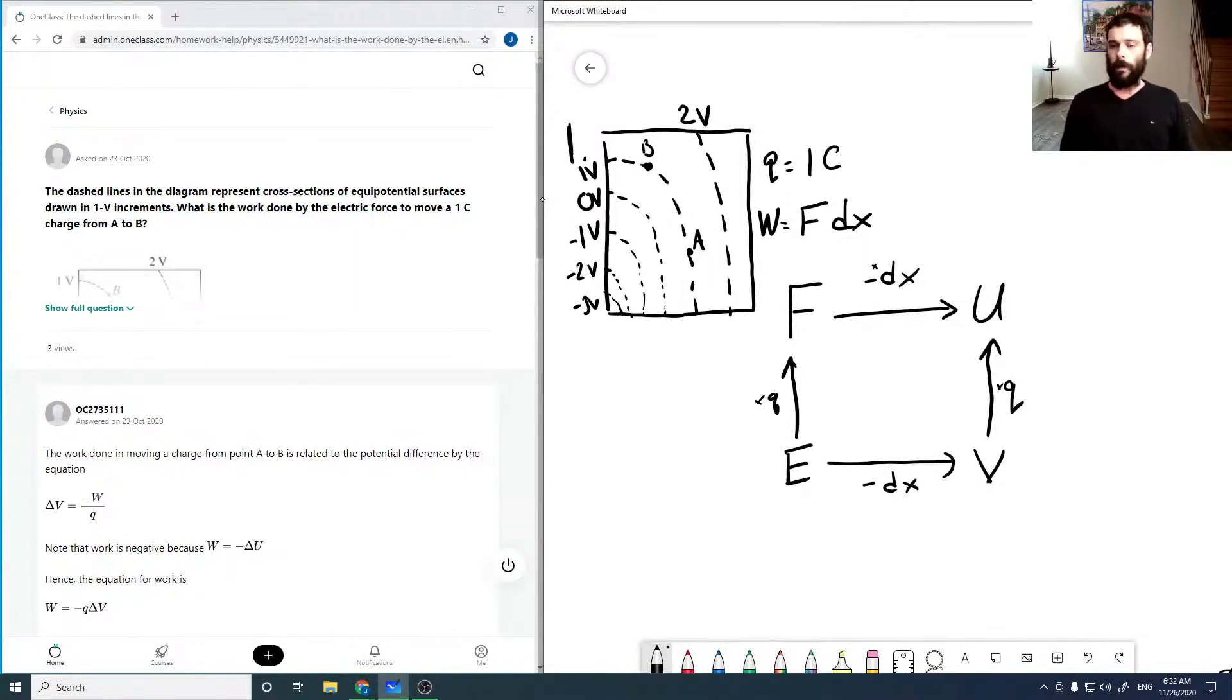So in this case, we've got potentials and we've actually got a delta potential. So that means that going from a delta V to a delta U, we just multiply by q. So delta U is q delta V.